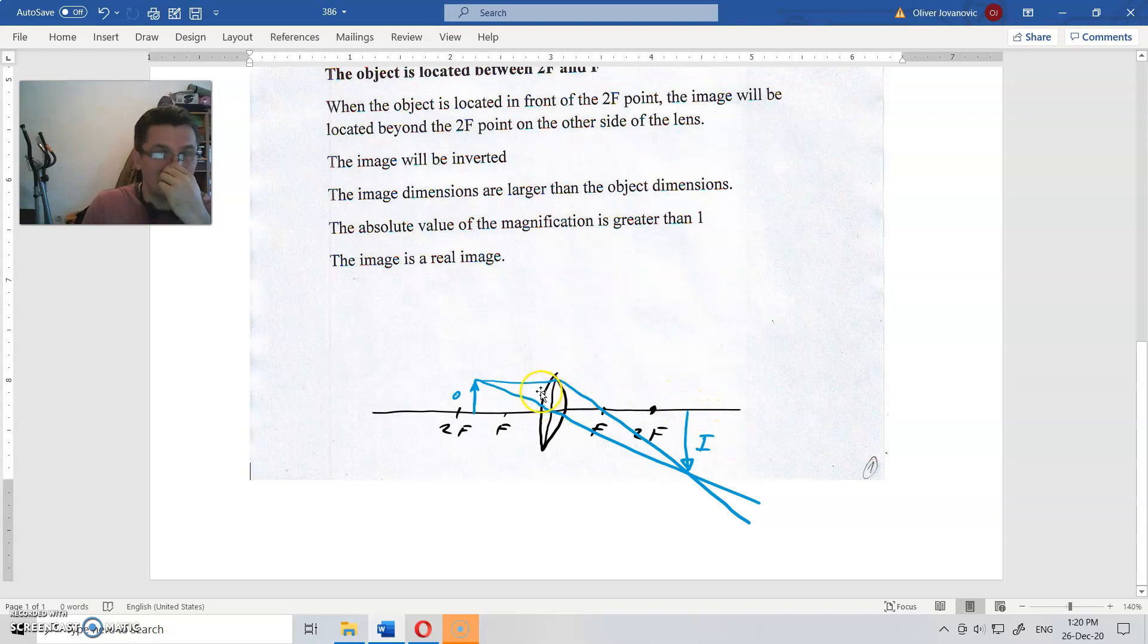That's all there is to it. So the image will be inverted, the image dimension is larger than the object. The absolute value of magnification is greater than one. When you divide the distance from here to here with this distance, you will get a number that is larger than one. The image is real.